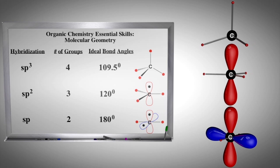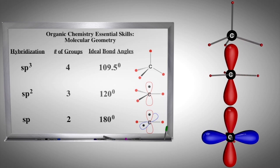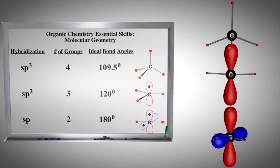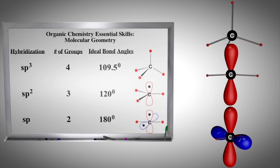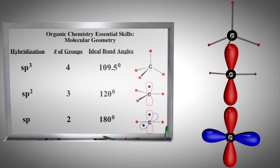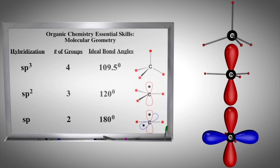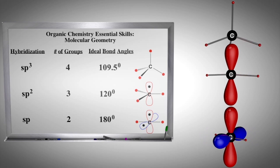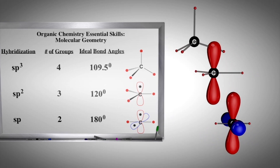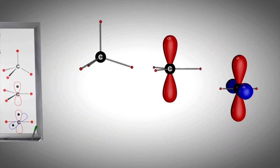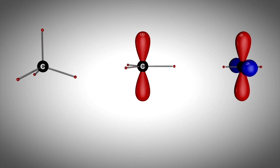For sp3, the exponents add to four; thus, an sp3 atom has four groups. For sp2, the exponents add to three; thus, an sp2 hybridized atom has three groups around it. These hybrid building blocks allow the respective number of groups to be as far apart as possible.